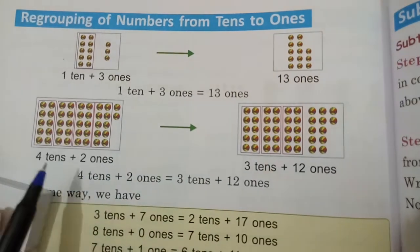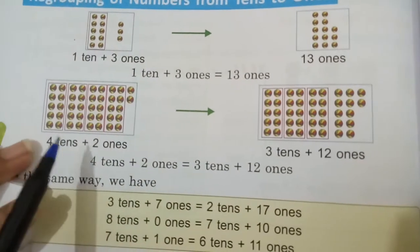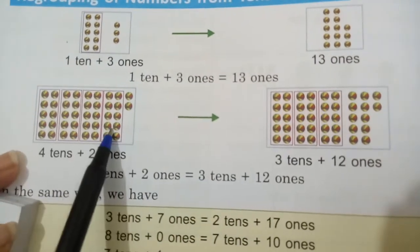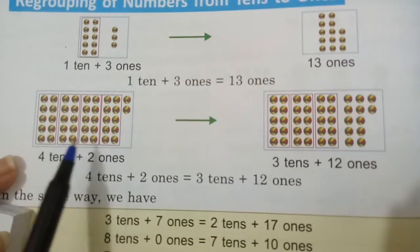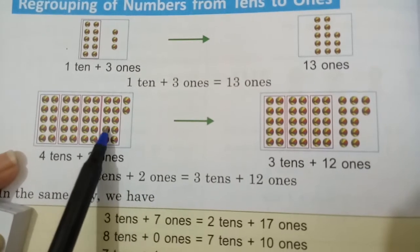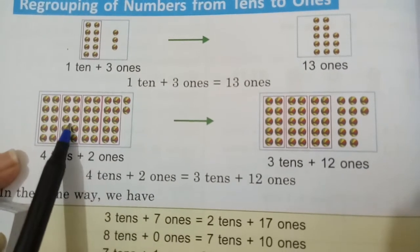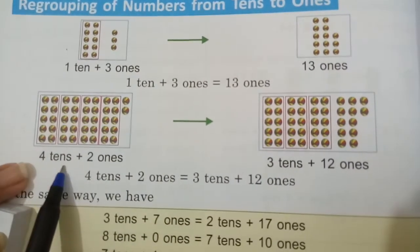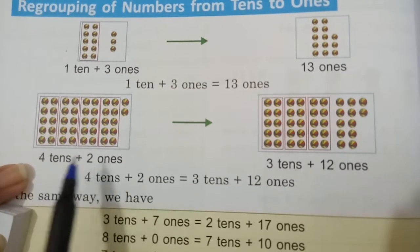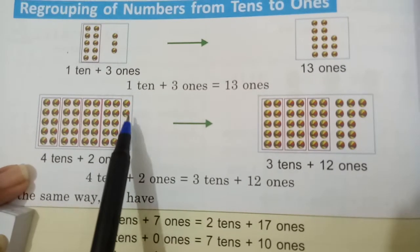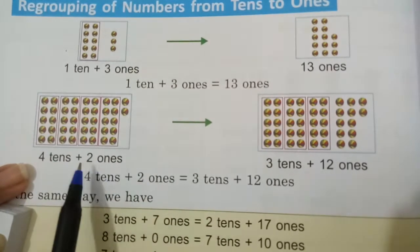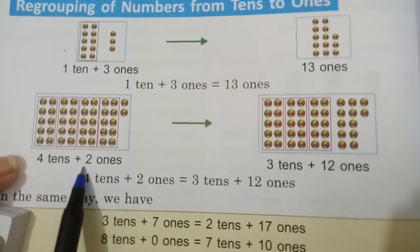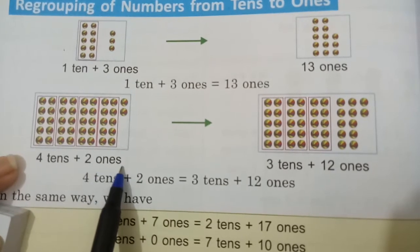Now let's look at another example. Here we have ten-ten groups — we count four groups, so we call it four tens. And two balls are separate, so we call them two ones. Four tens plus two ones.